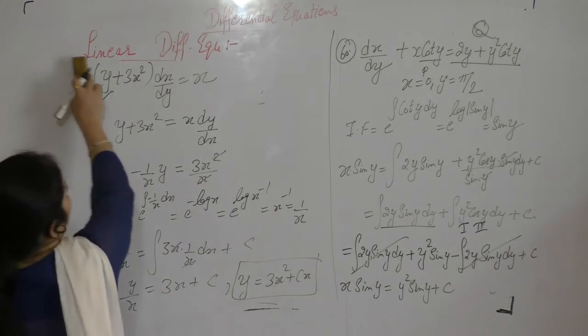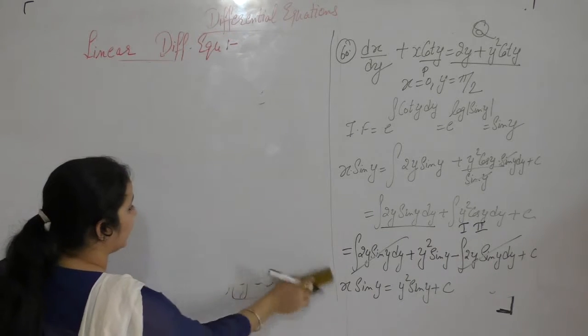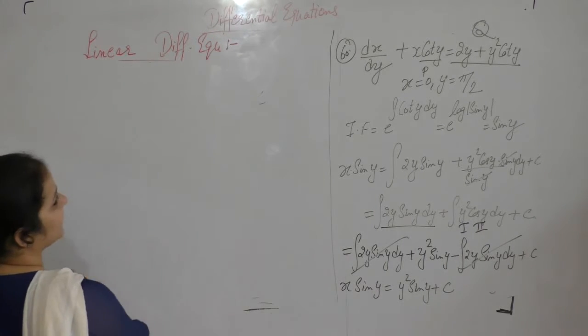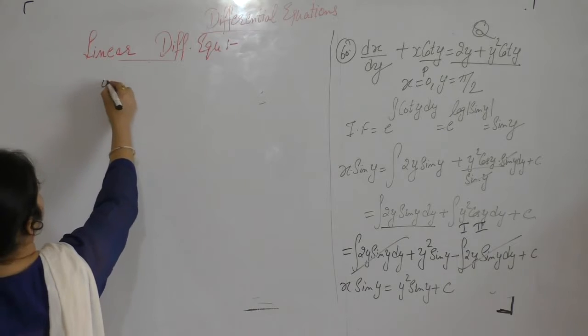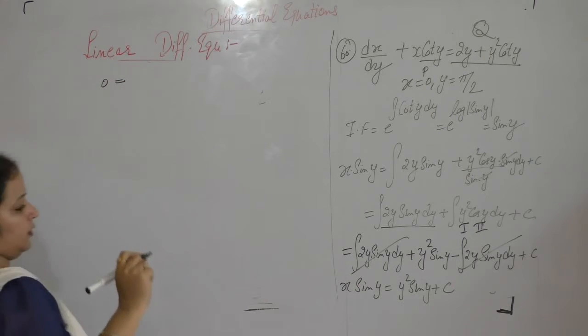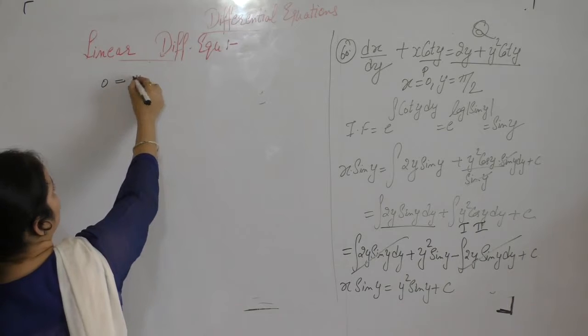Now put the values. When x is 0 and y is 5π/2, 0 into something is 0. So y is 5π/2, 5π/2 squared.